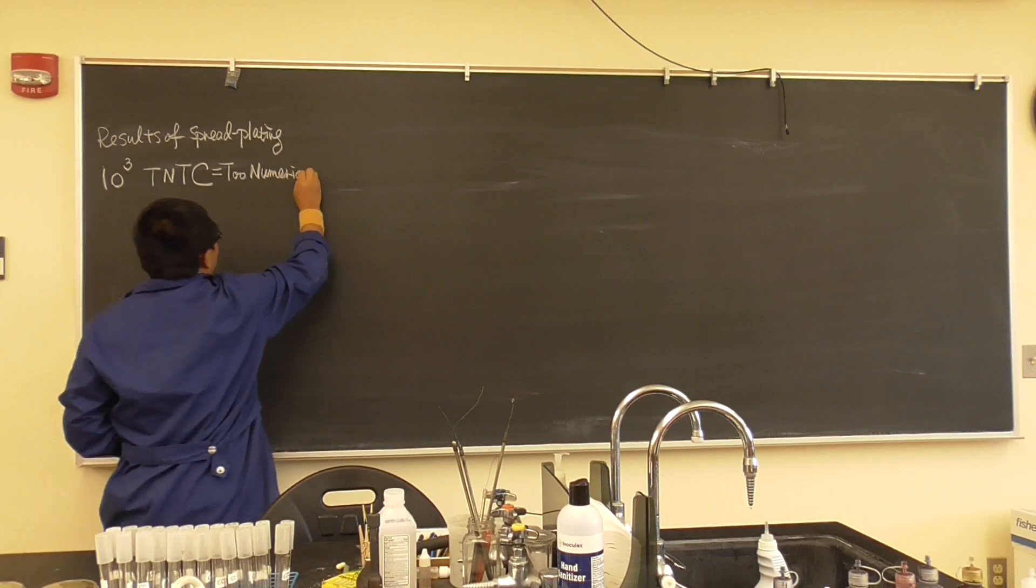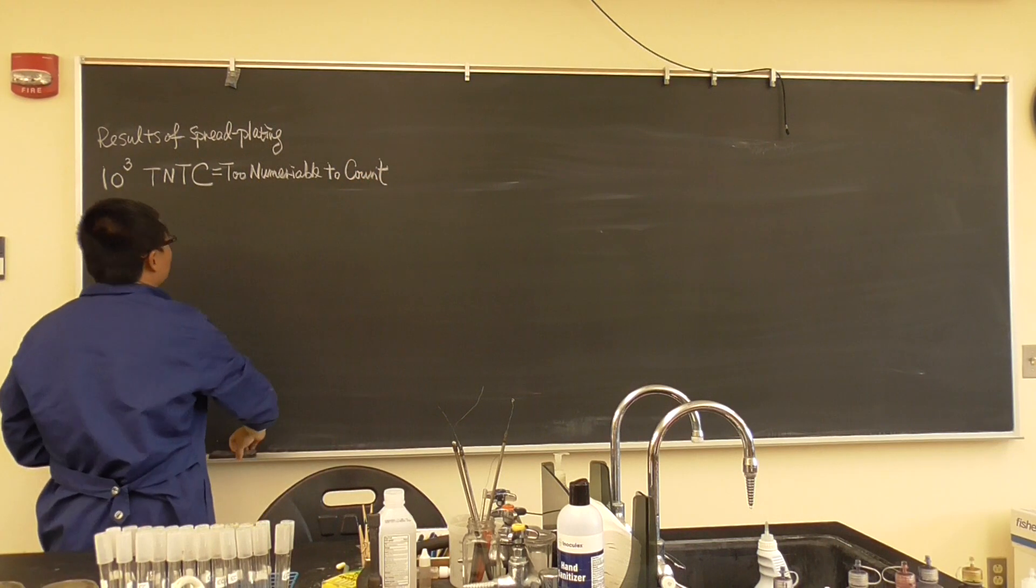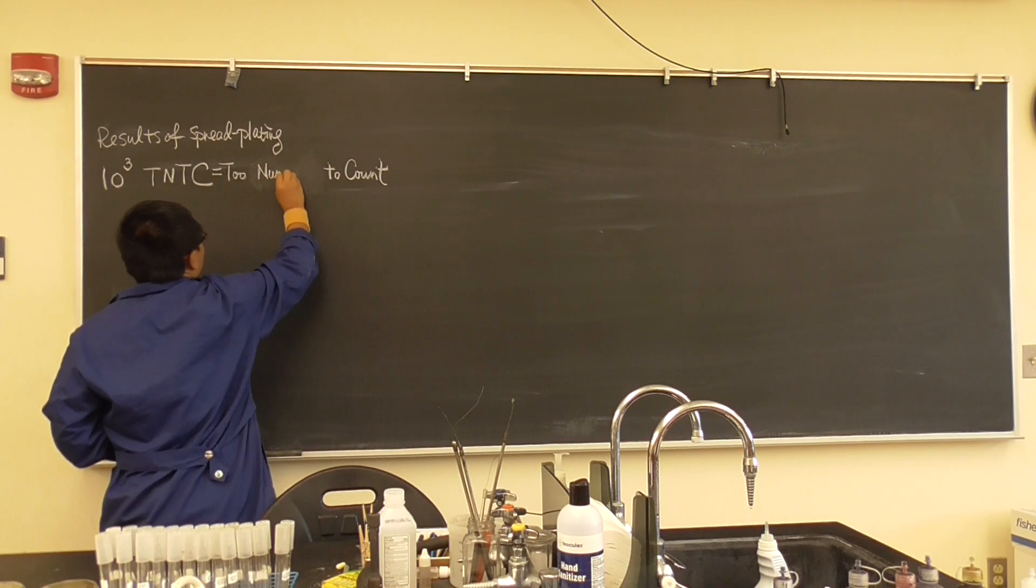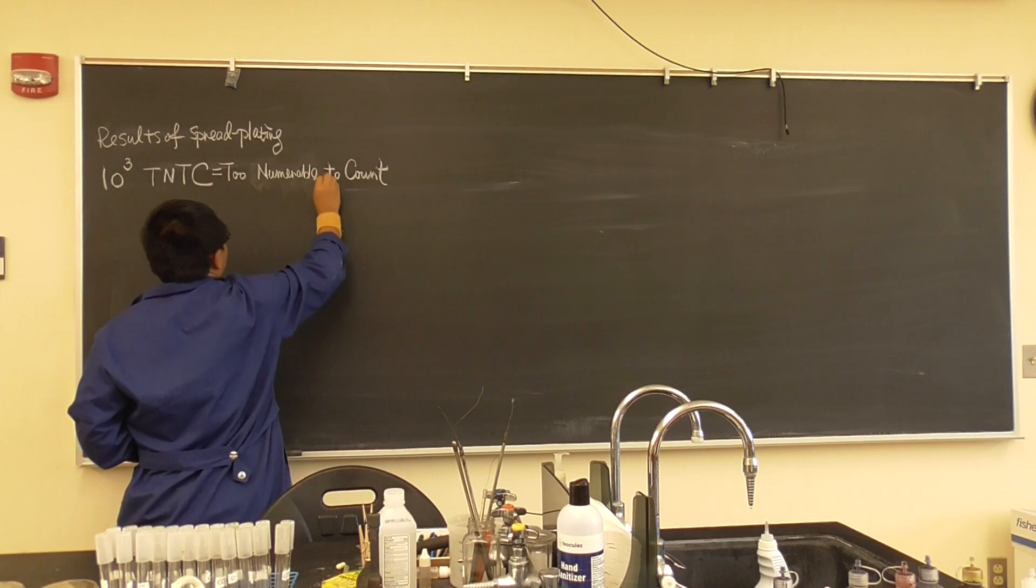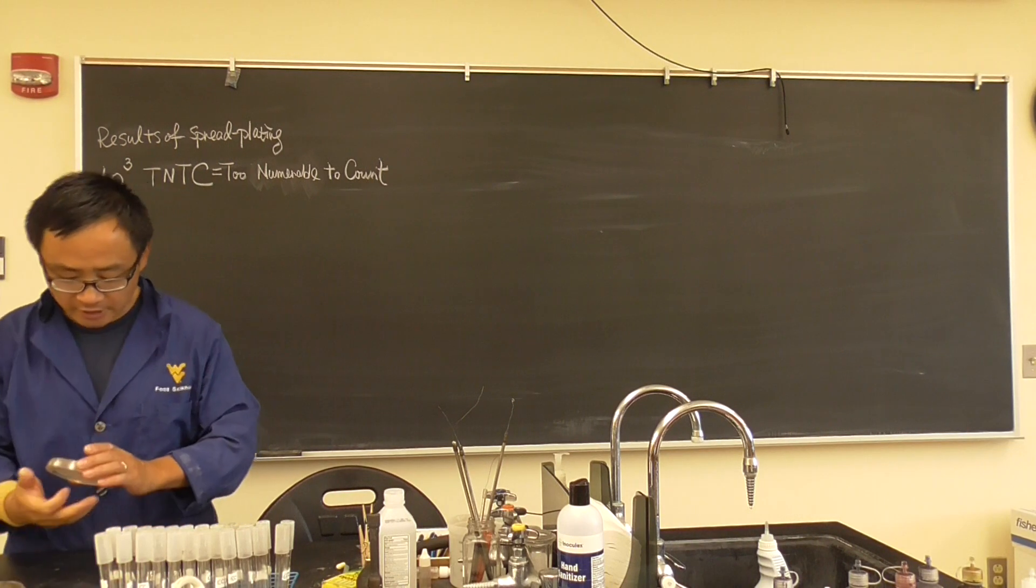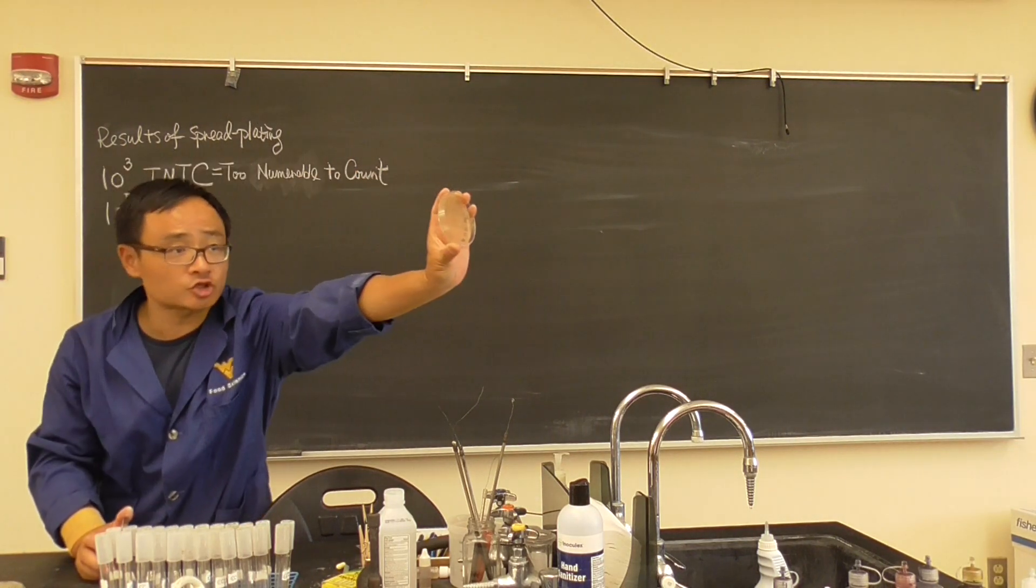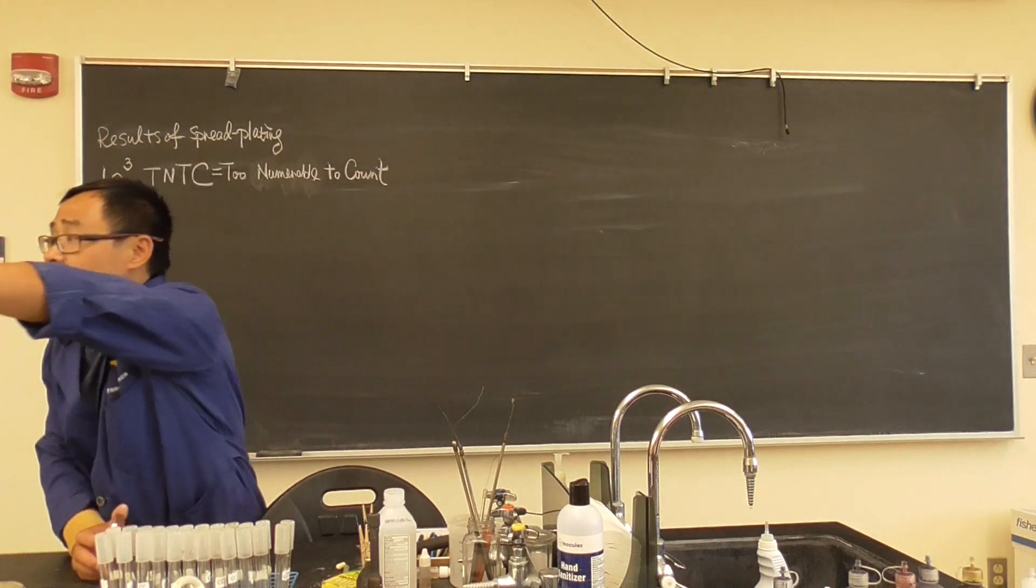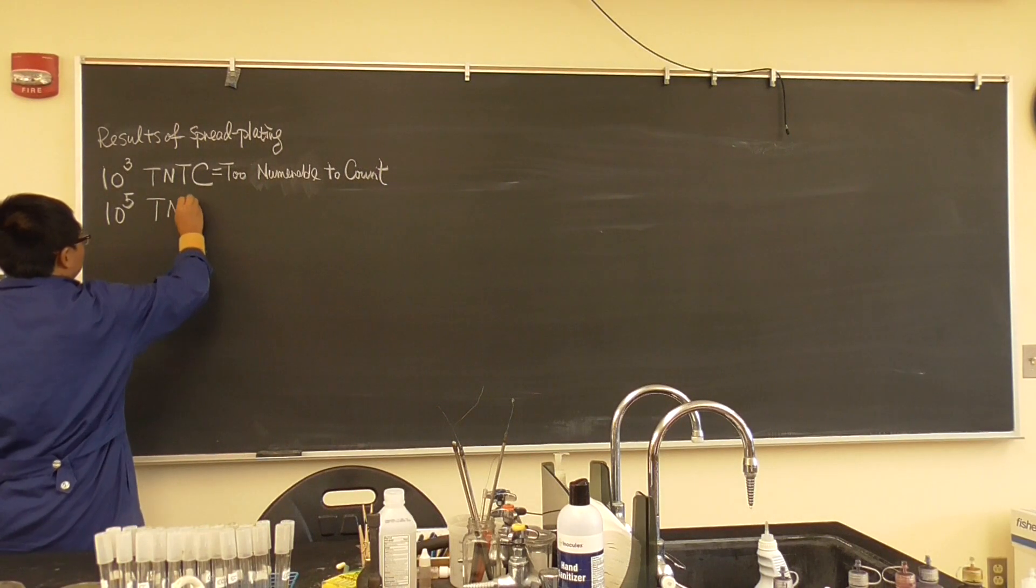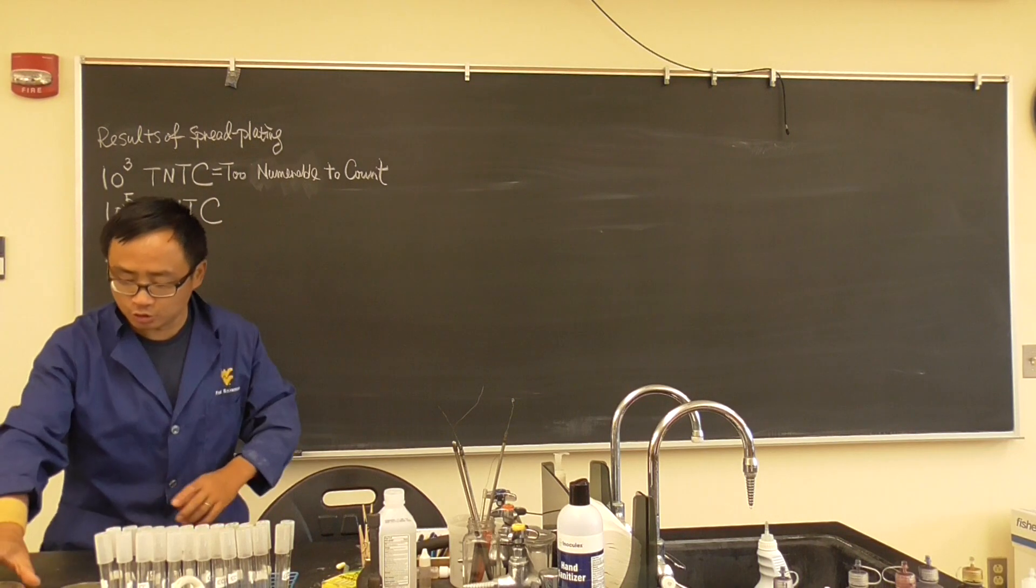You cannot even see individual colonies. So what we said, TNTC, indicates too numerous to count. You can just say too much to count, too numerous to count. Let's look at 10 to the 5. What does it look like? Something like this. You can see individual colonies start to show up. Is that still too many? Yes, it's still too many. So that is again TNTC.